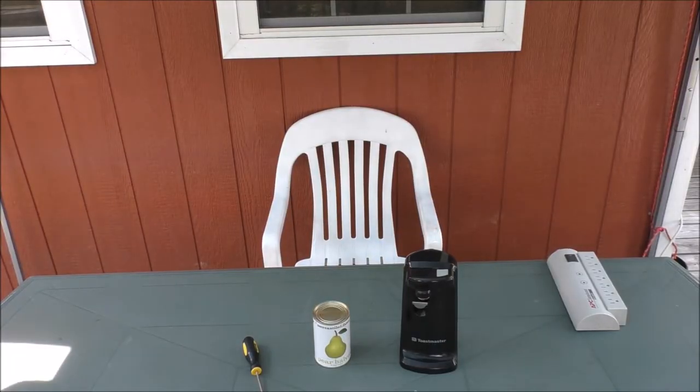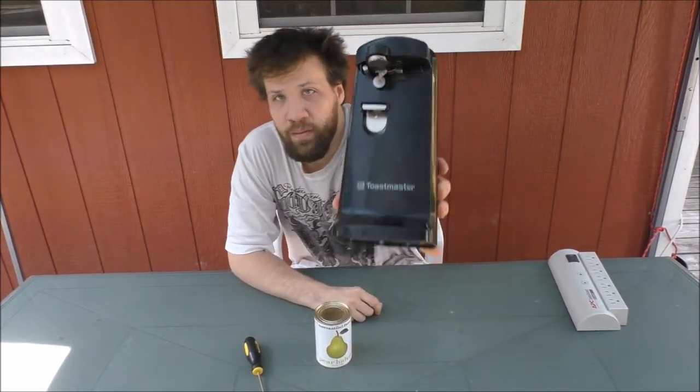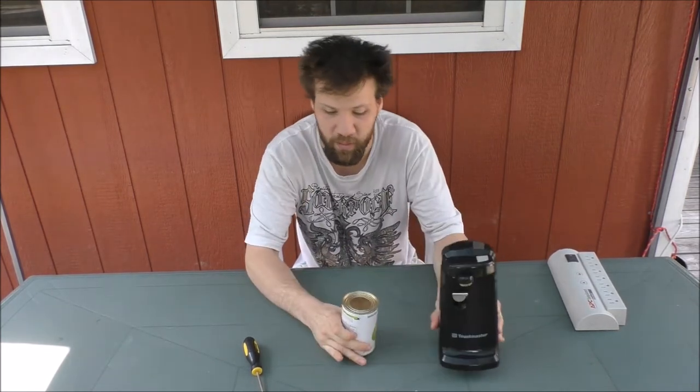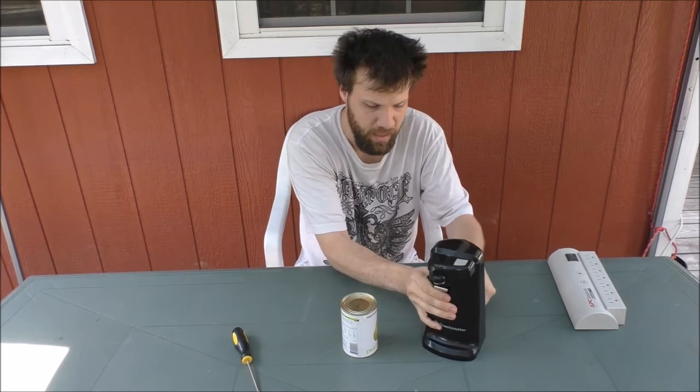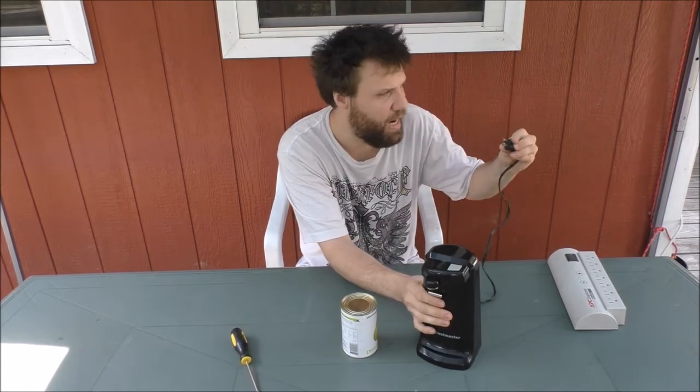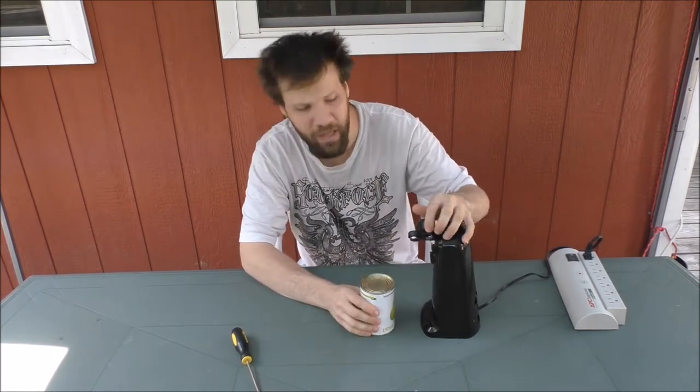Alright, what do we got on the operating table today? We got the old can opener right here and we also have a very old can of peas from 2015. I'm going to try to open it with this can opener. We got a small screwdriver and a power supply. It's time to tear the thing apart and find out what's going on, why it won't open cans.